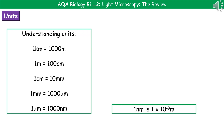One of the things we need to consider when talking about cells is what units we're actually going to use to describe either the cell or the subcellular structures. I've given you a conversion chart: a kilometer is the same as a thousand meters, a meter is a hundred centimeters, and one centimeter is 10 millimeters. Those three are familiar from general knowledge. The new ones are: one millimeter is the same as a thousand micrometers, and one micrometer is the same as a thousand nanometers. One nanometer can also be written in standard form as 1 × 10⁻⁹ meters.